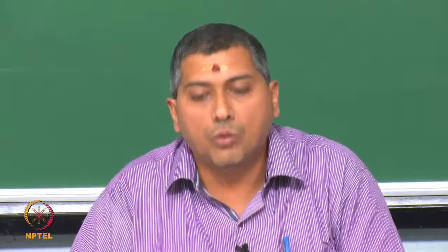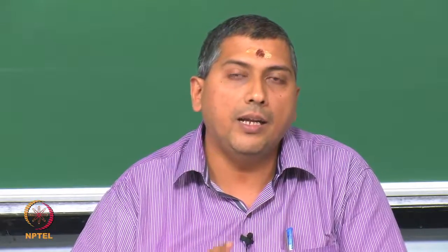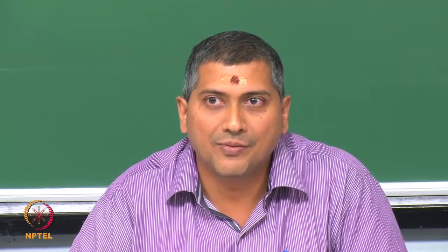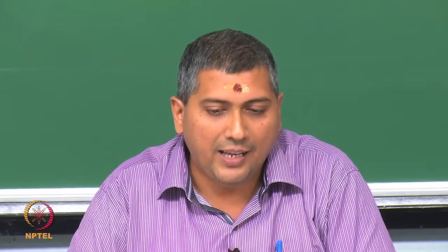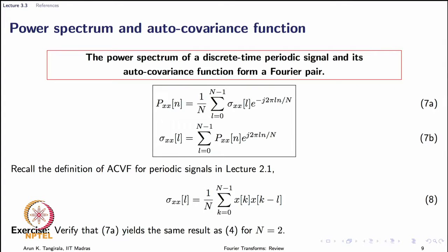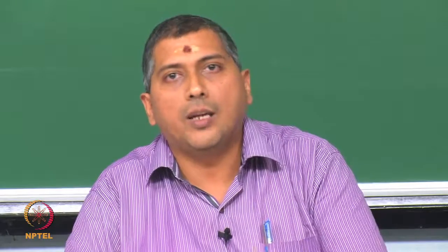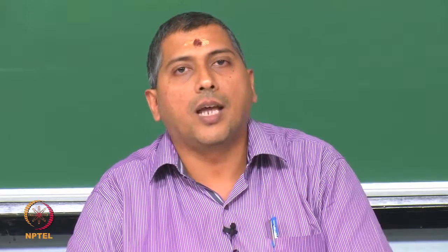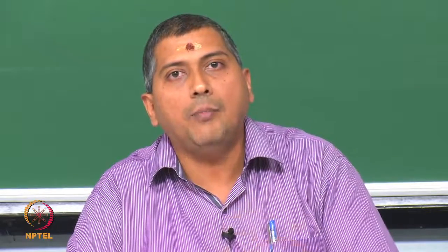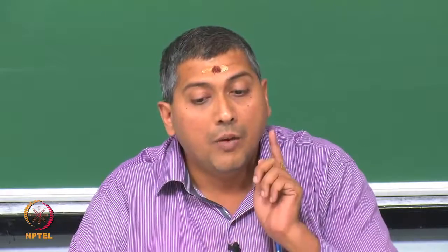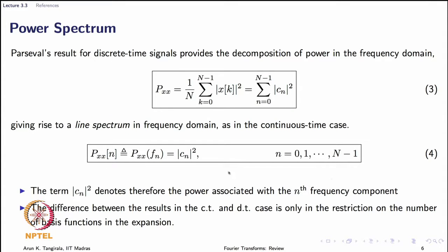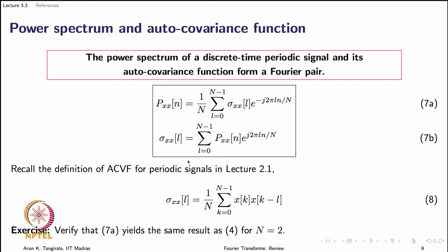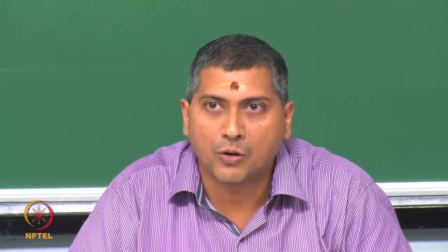Why is this result so important? For two reasons. First, to compute the power spectrum, I need not go through the Fourier transform of the signal directly — I can first compute the auto covariance function and then take its Fourier transform. Second, and more crucially, when we move to the class of random signals, Fourier representations of random signals do not exist, but auto covariance functions can be defined for random signals. So we define the power spectrum as the Fourier transform of the auto covariance function rather than via the Fourier transform of the signal itself.